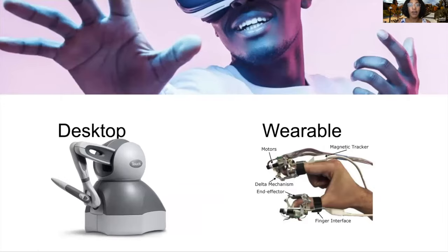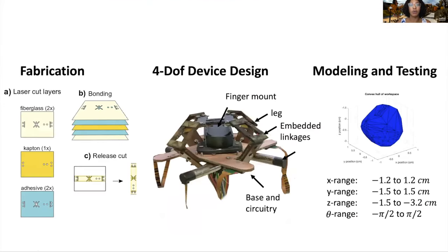We are developing a mesoscale robotic device that uses layered manufacturing techniques like those seen in circuit design. The device is a lightweight and portable fingertip-mounted haptic device that aims to create more realistic touch by providing normal, shear, and torsional feedback to the fingertips.